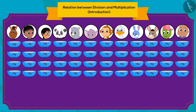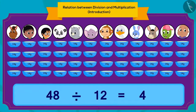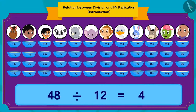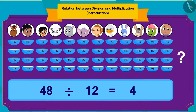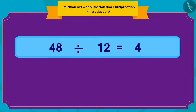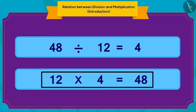How can we write this using division? We can write it like this using division. Children, can you write this division in the form of multiplication? If you like, you can pause the video and find the answer. Very good children, you have found the right answer. If there are 12 people and each person gets 4 kg of kheer, then total quantity of kheer is 48 kg. 12 multiplied by 4 is 48.